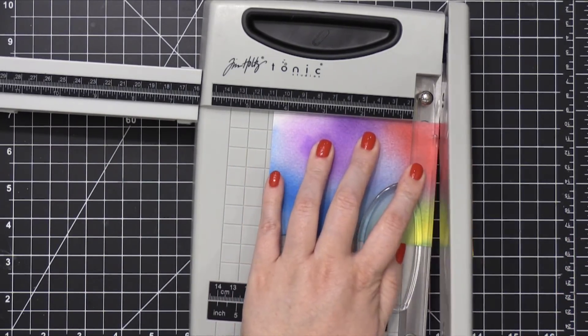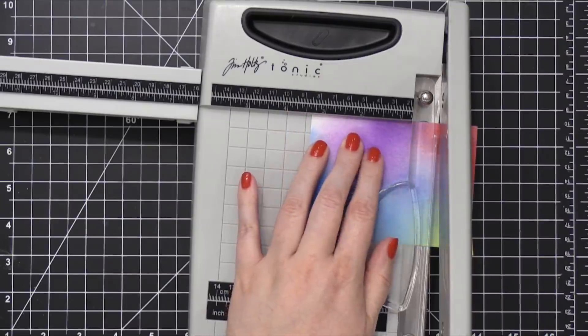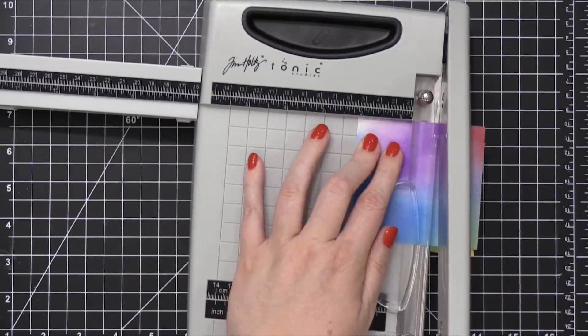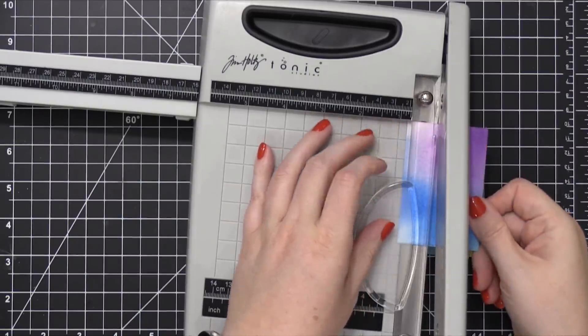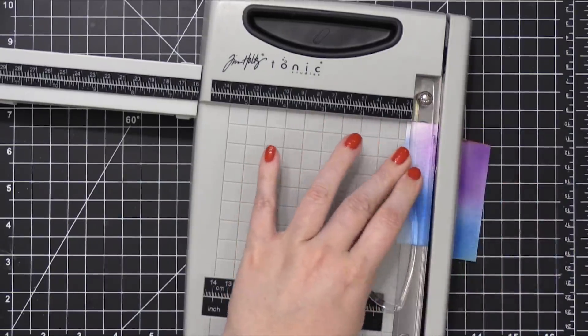Sometimes you just need a card idea for what to do with all of those backgrounds. So today I'm going to be using some products from Concord & 9th to create a large birthday cake image on a card.